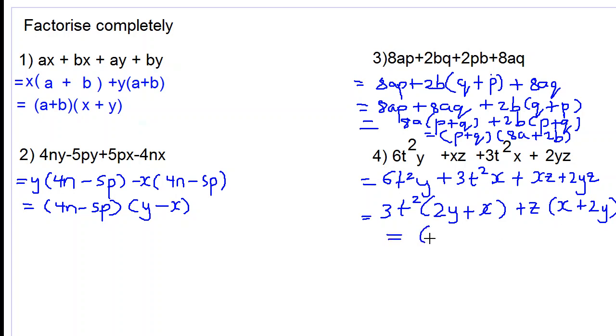Now that we have the same two brackets in the first two terms, we take out that bracket as the common factor, and then we'll have 3t squared remaining, plus z, that will go in the other bracket. This is our final answer, thanks for watching.